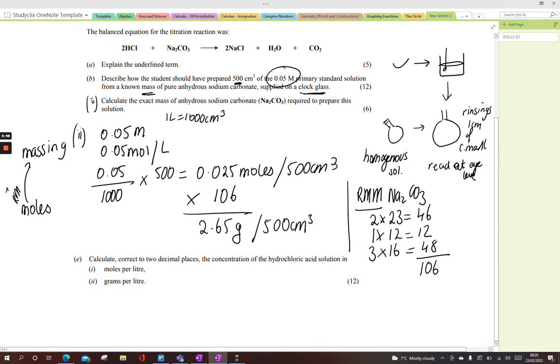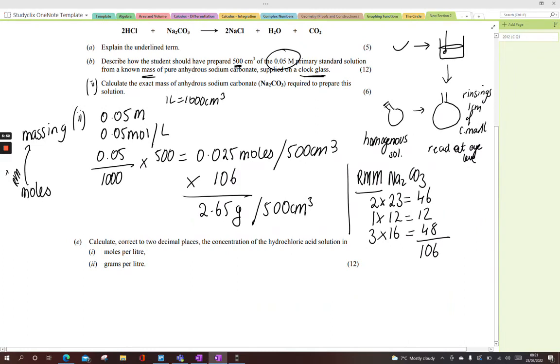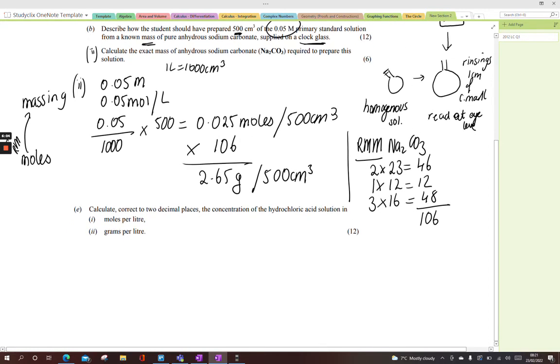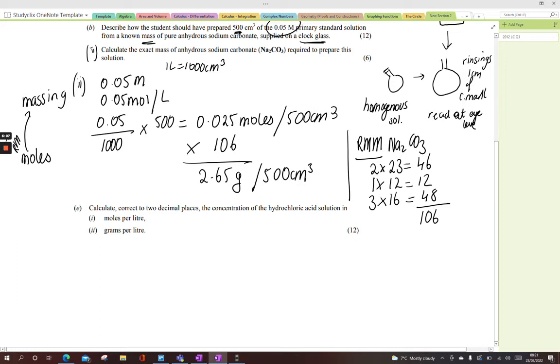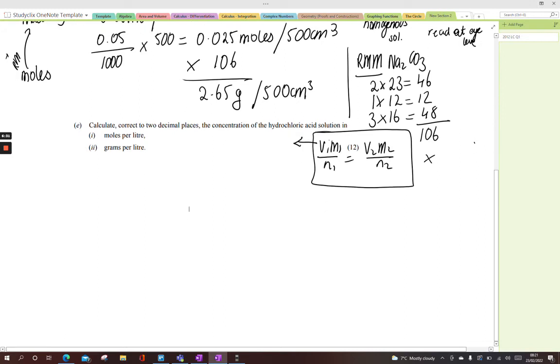Parts C and D are just asking about the indicator, methyl orange, yellow to peachy pink, and why you use it—safety reasons, so you don't swallow the chemicals. And something about a burette, why it was filled above the zero mark—to ensure the portion below the tap was filled. Now technically this question could be answered using a formula, but we'll do it the first principles way.